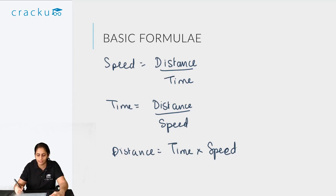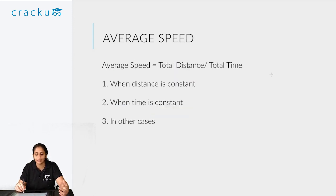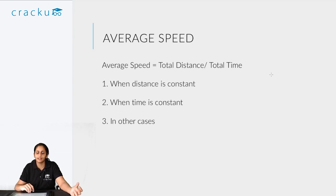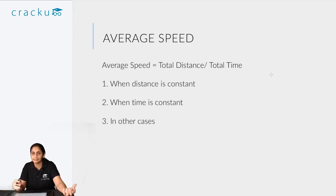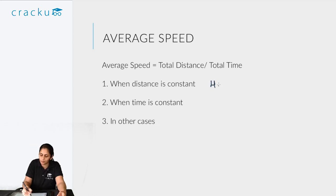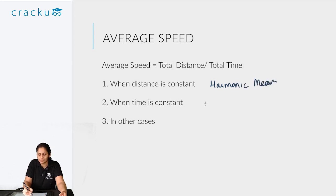Now that we know the basic foundation, let's take a look at average speed. Essentially, average speed is total distance divided by total time taken. There are many sub-formulas on this — for example, when the distance is constant, the average speed is the harmonic mean of the two speeds. When the time is constant, the average speed is the arithmetic mean of the two speeds.